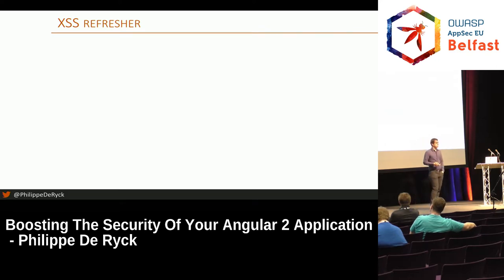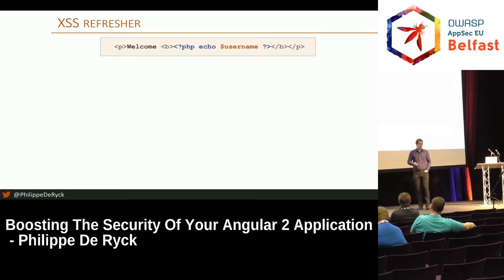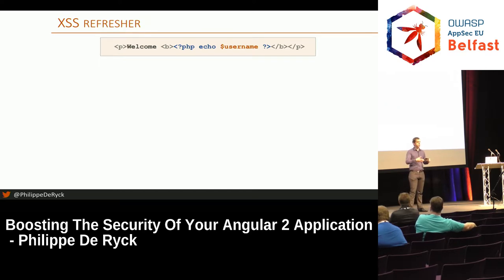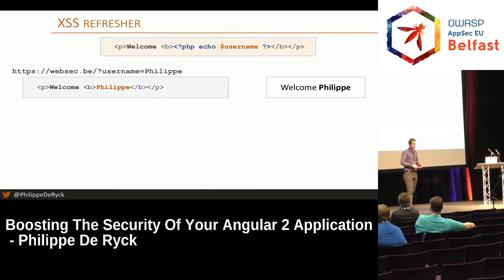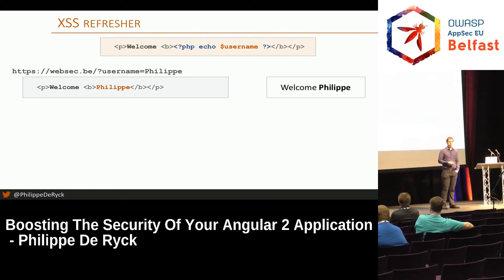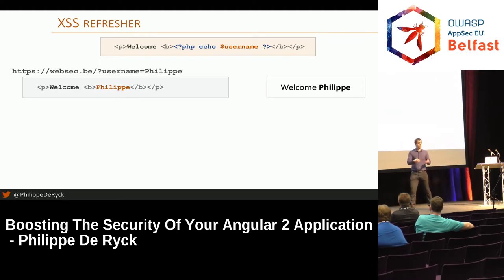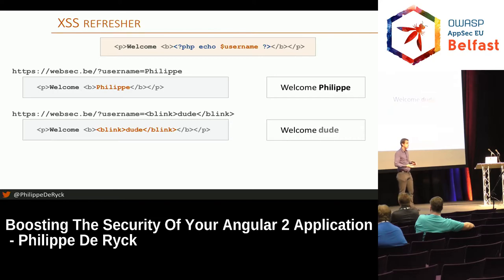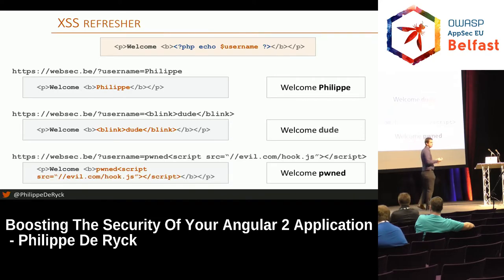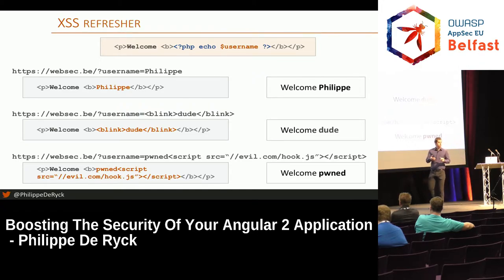A refresher on cross-site scripting, back to the PHP days. You had a page with PHP code and you put a variable into the page. If you take the variable from the URL and somebody gives you their name, you build a page with that name. But if somebody gives you a script tag, that gets executed, and you can load remote scripts into your page. This is the textbook definition of cross-site scripting — still a big problem in many applications.